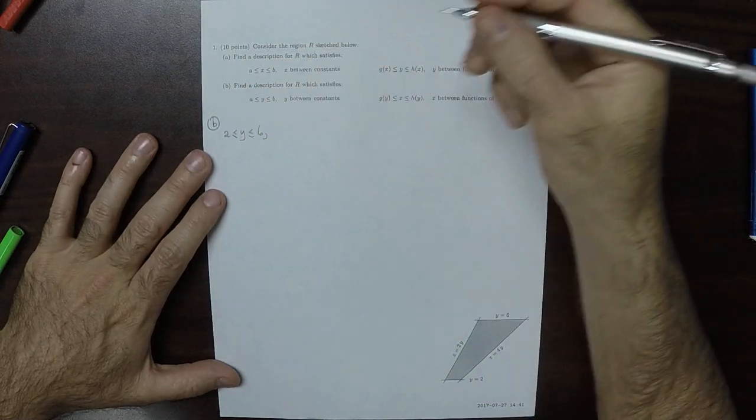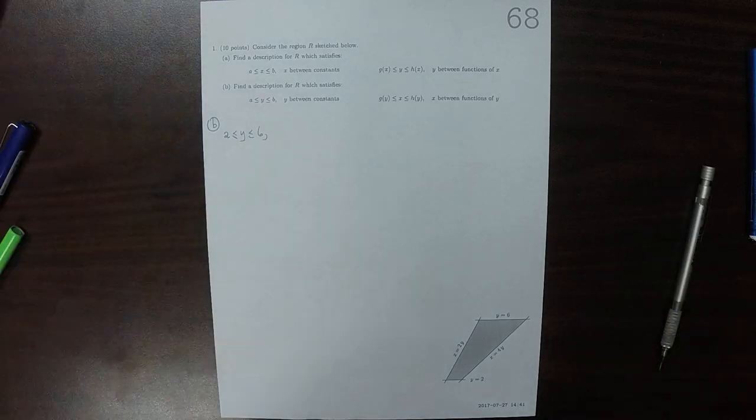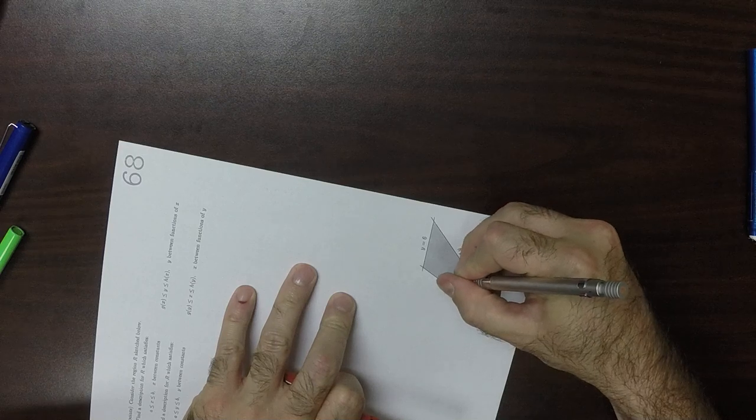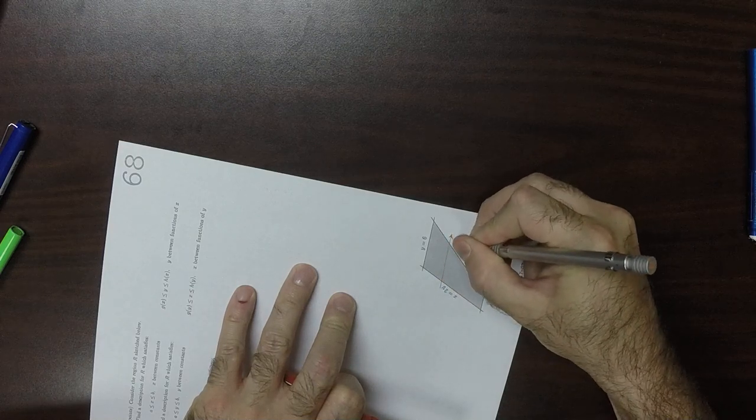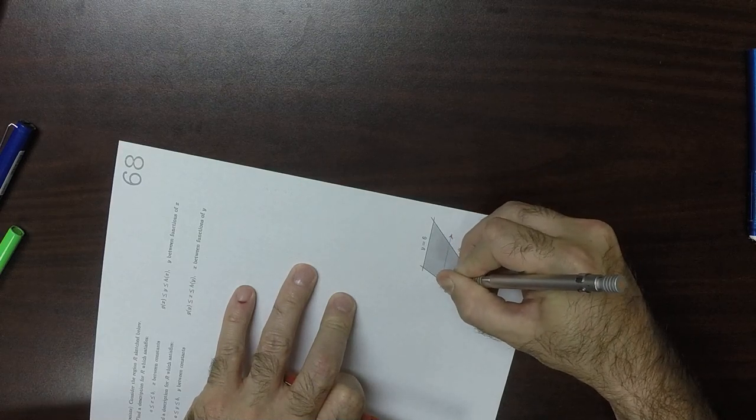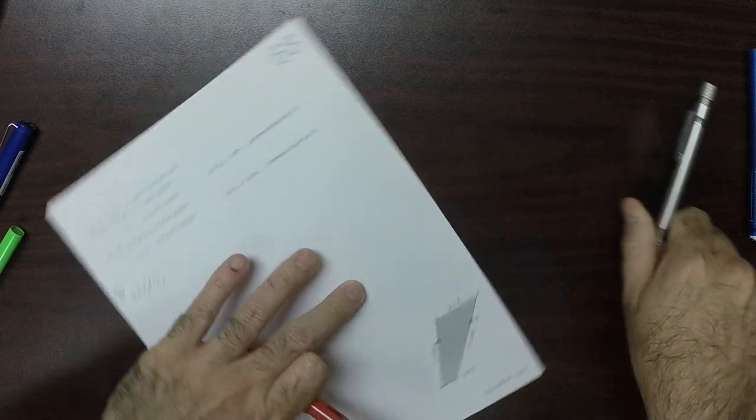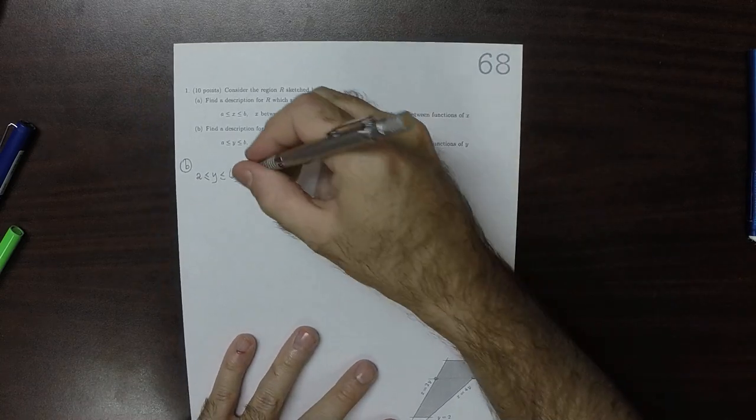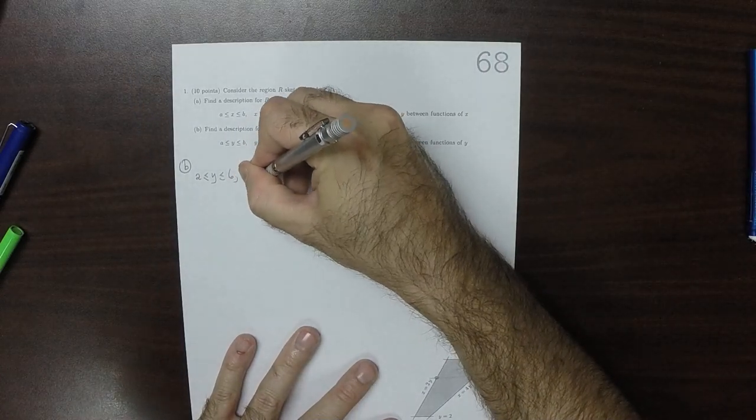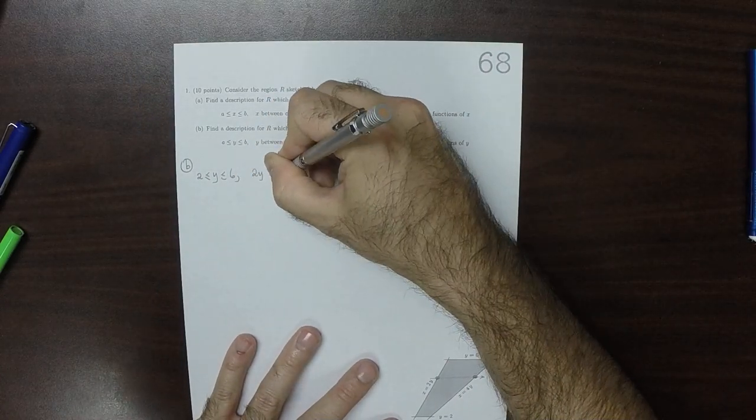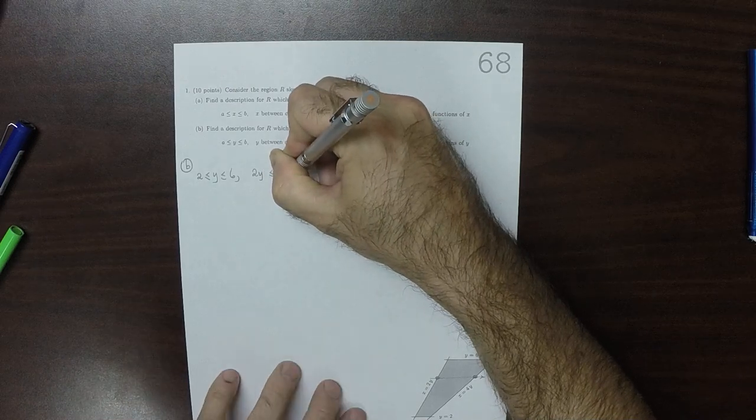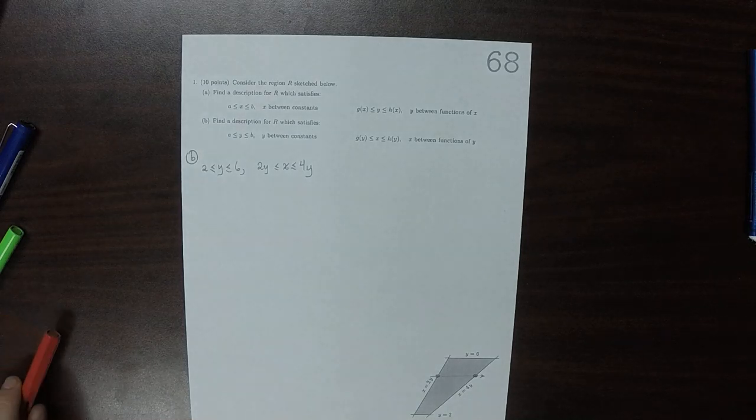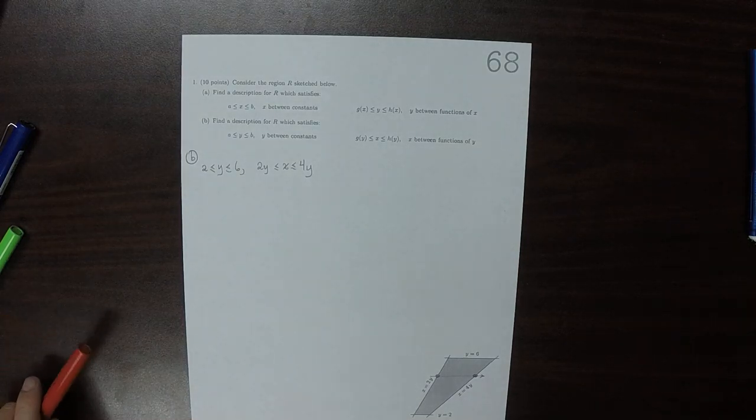And then, if you're in between those two values, then you first hit this one and then that one. That means that 2Y is less than or equal to X is less than or equal to 4Y. So B is really pretty straightforward.